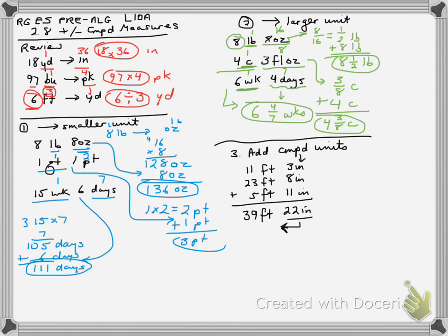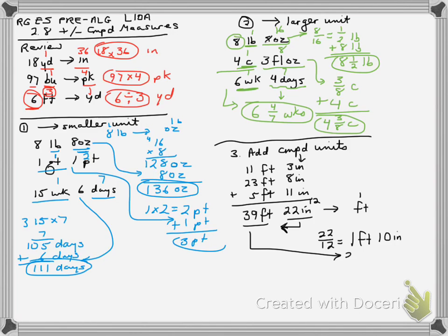If we're taking 22 inches and converting to feet, recall there are 12 inches in one foot. So taking smaller unit to larger unit, we divide by 12. Converting to a mixed number: that's 1 foot with remainder 10, so there would be 10 inches left over. We take that 1 foot and add it to the 39 feet, giving a total of 40 feet 10 inches.